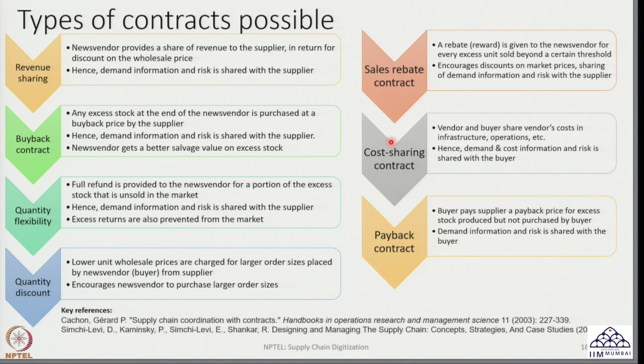Other contracts not directly applicable here but worth exploring are cost sharing contracts, where the vendor shares cost information with the buyer, enabling larger order sizes to be manufactured. Similarly, in a payback contract, the vendor may have to produce large lot sizes which go unsold, and the buyer offers to purchase that excess unsold stock to compensate. This is a contract type where the supplier has more information about the market and costs, as opposed to the current scenario we are examining.